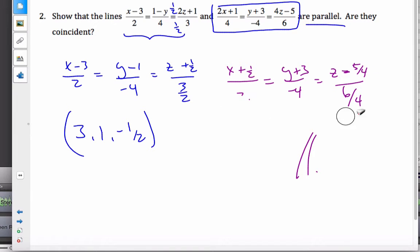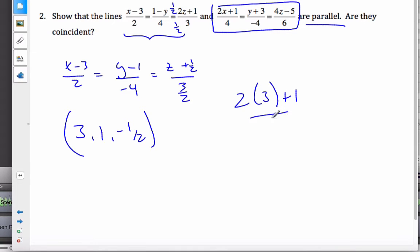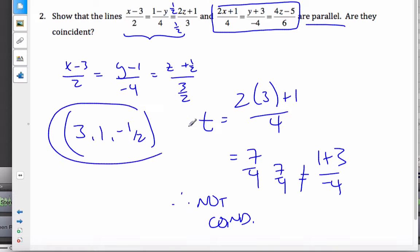So, I'm not going to deal with a fractional version. I'm going to just go right straight to this version and plug in x 2 times 3 plus 1 over 4. This is equal to our parameter t, which is equal to 7 over 4. Taking 1 and put it in here, I get 1 plus 3 over negative 4, which is definitely not equal to 7 fourths. Therefore, they are not coincident. Because these components are not equal for this point here.